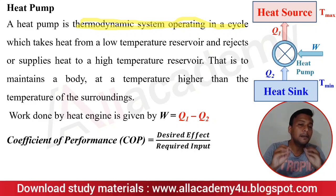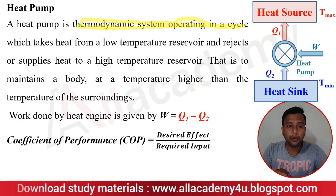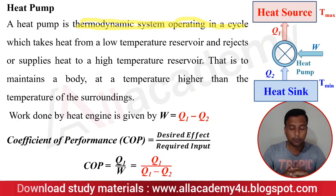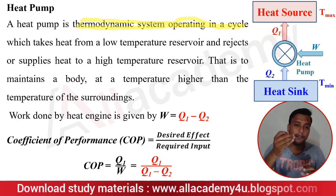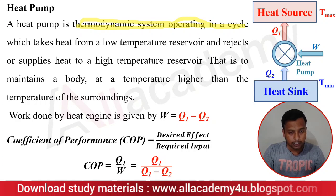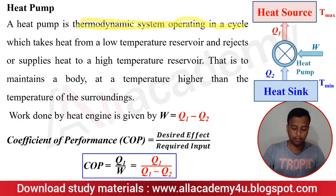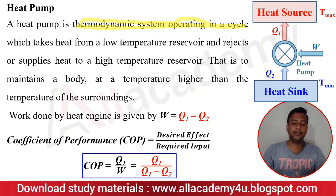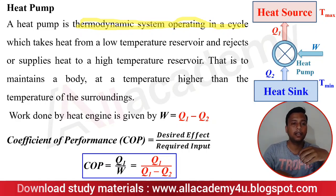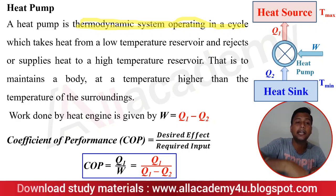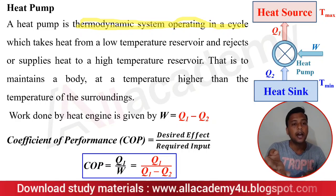COP is defined as the desired effect divided by the required input — whatever output we want relative to the input we provide. For a heat pump, COP is Q1 divided by W, that is, the heat supplied from the heat pump to the heat source divided by the work done: COP_HP = Q1 / (Q1 − Q2). The heat pump is essentially the reverse of a heat engine — instead of producing work from heat, it uses work to move heat from a low- to a high-temperature reservoir.